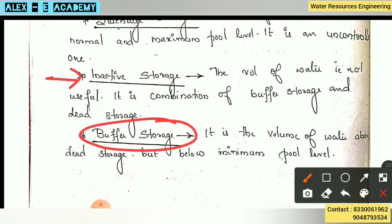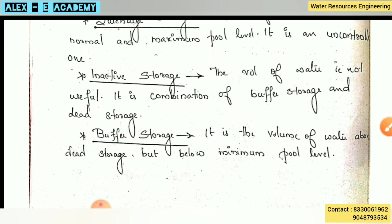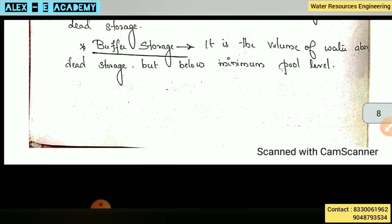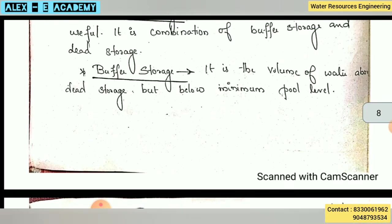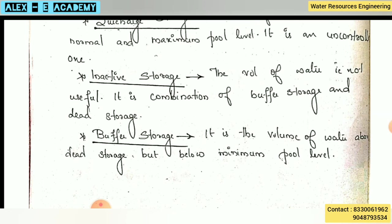Inactive storage is the volume of water that is not useful. We use the water volume of inactive storage as a combination of buffer storage and dead storage. Dead storage and buffer storage together include inactive storage. These are the zones of storage.